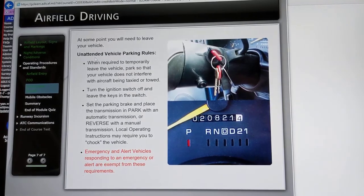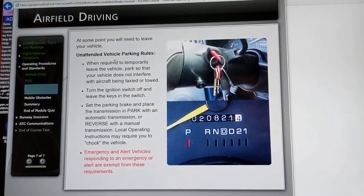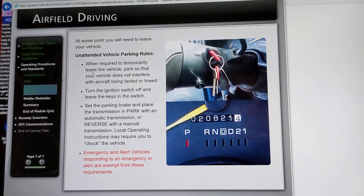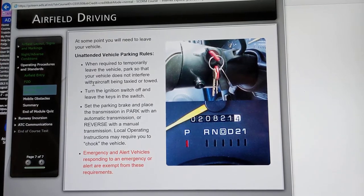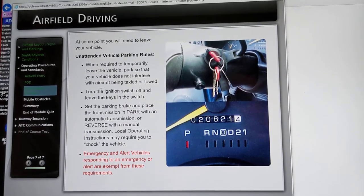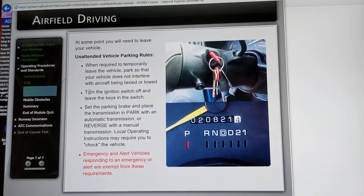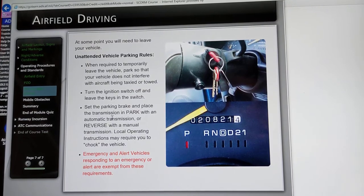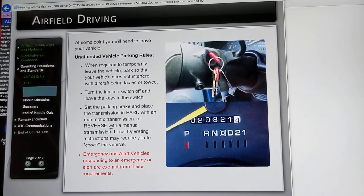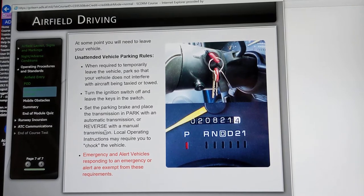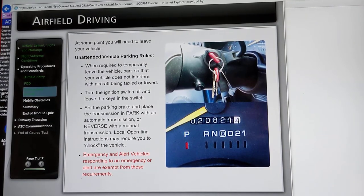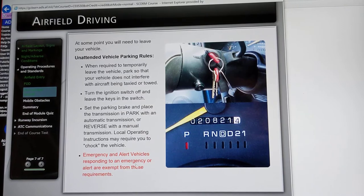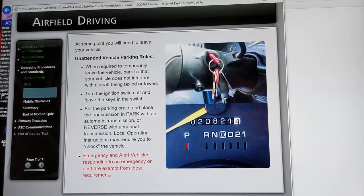Under unattended parking rules: when required to temporarily leave the vehicle, park so your vehicle does not interfere with aircraft being taxied or towed. Turn the ignition switch off and leave the keys in the switch. Set the parking brake and place the transmission in park for automatic or reverse for a manual transmission. Local operating instructions may require you to chock the vehicle. Emergency and alert vehicles responding to an emergency or alert are exempt from these requirements.